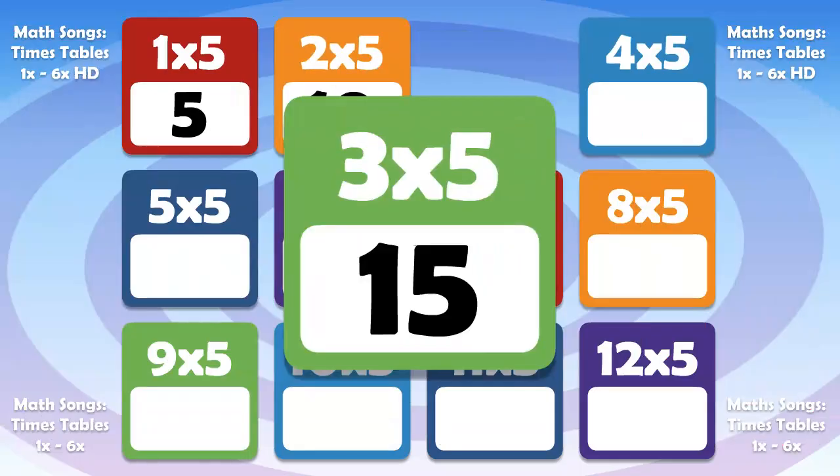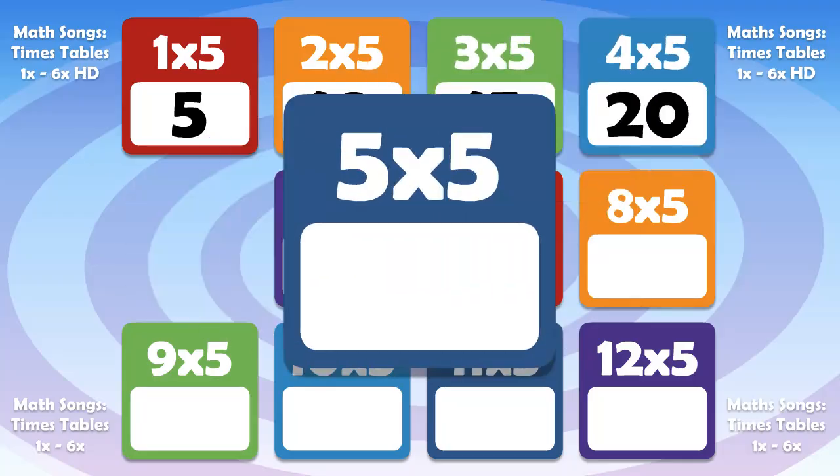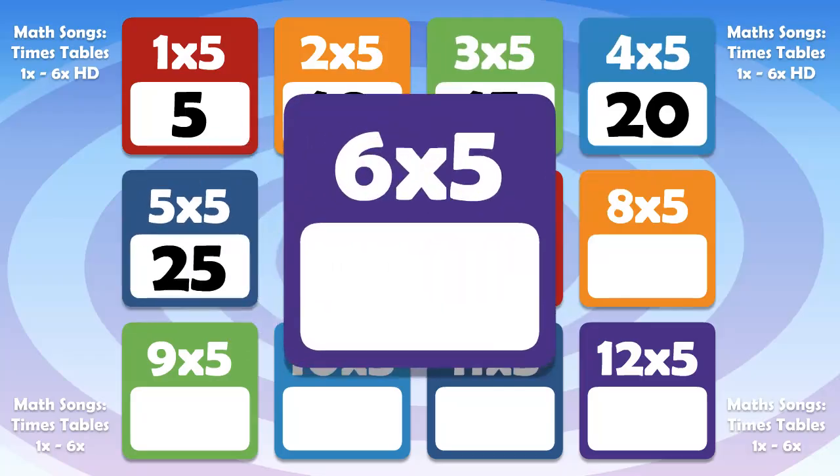4 times 5 is 20, 5 times 5 is 25, 6 times 5 is 30.